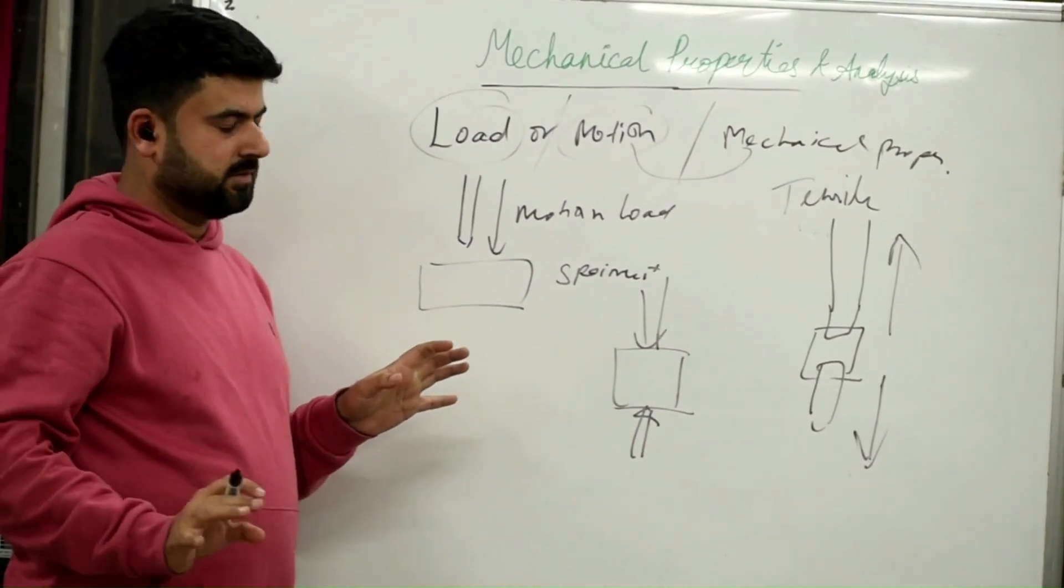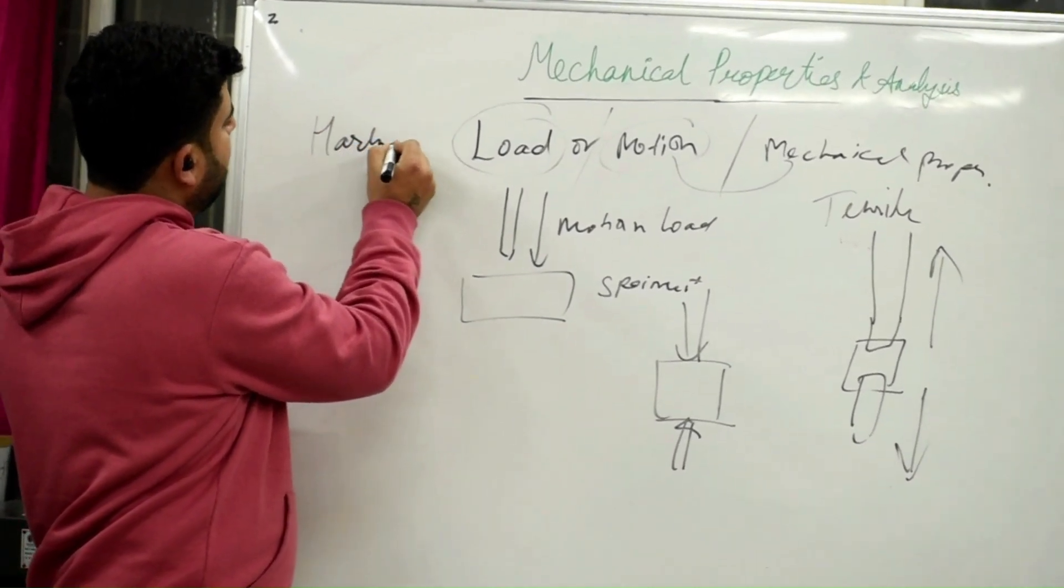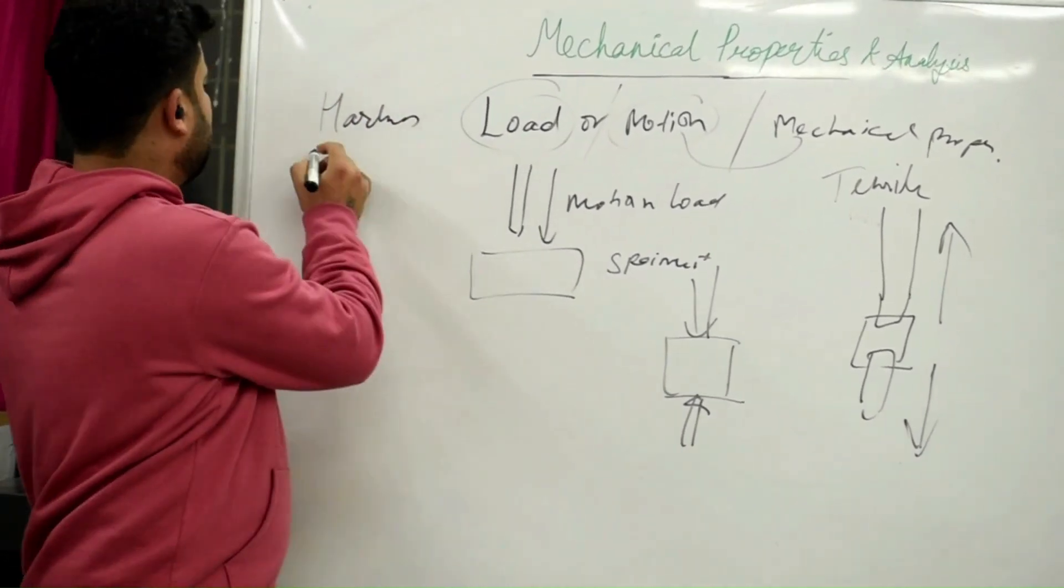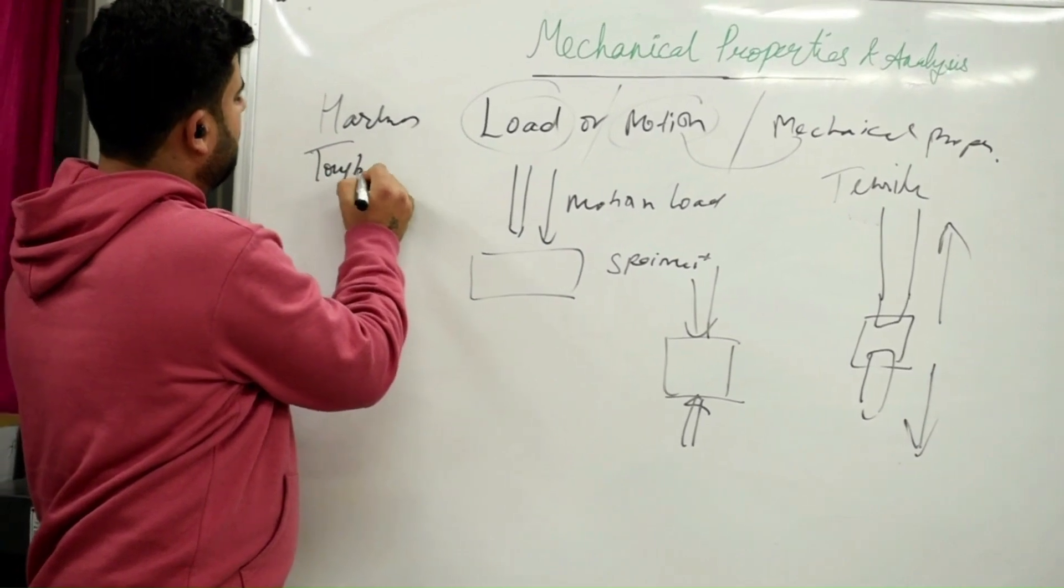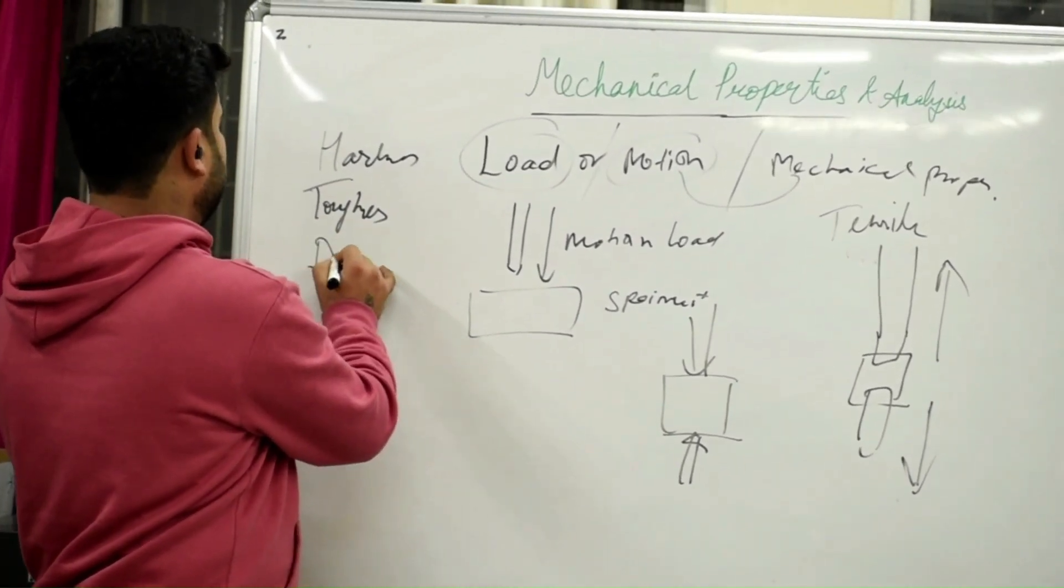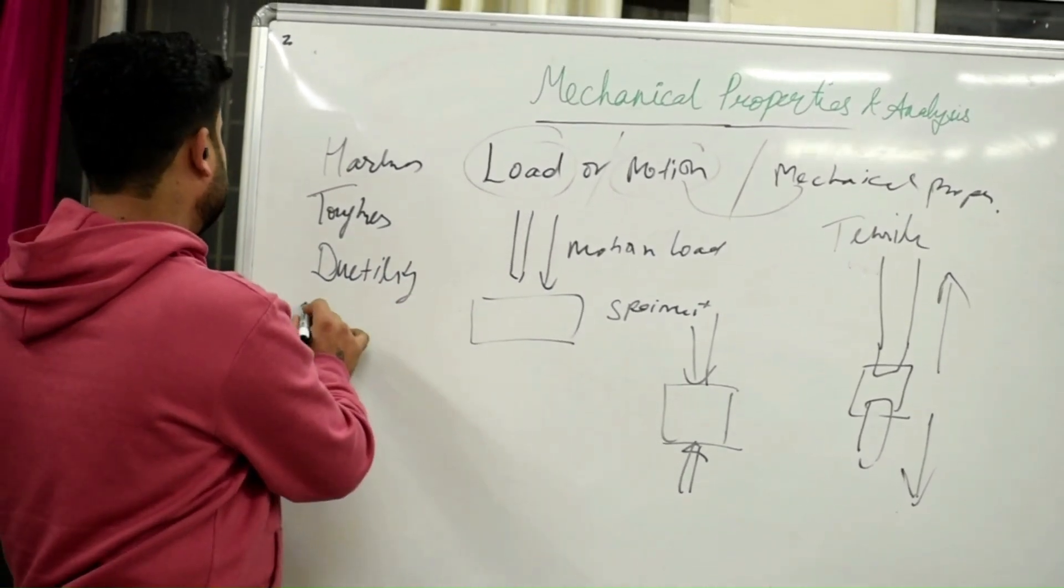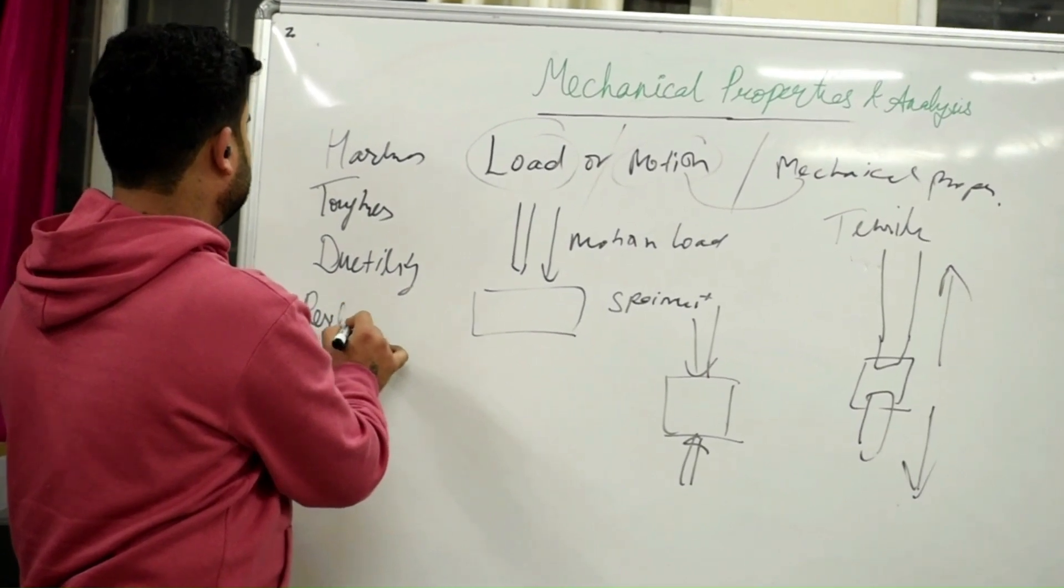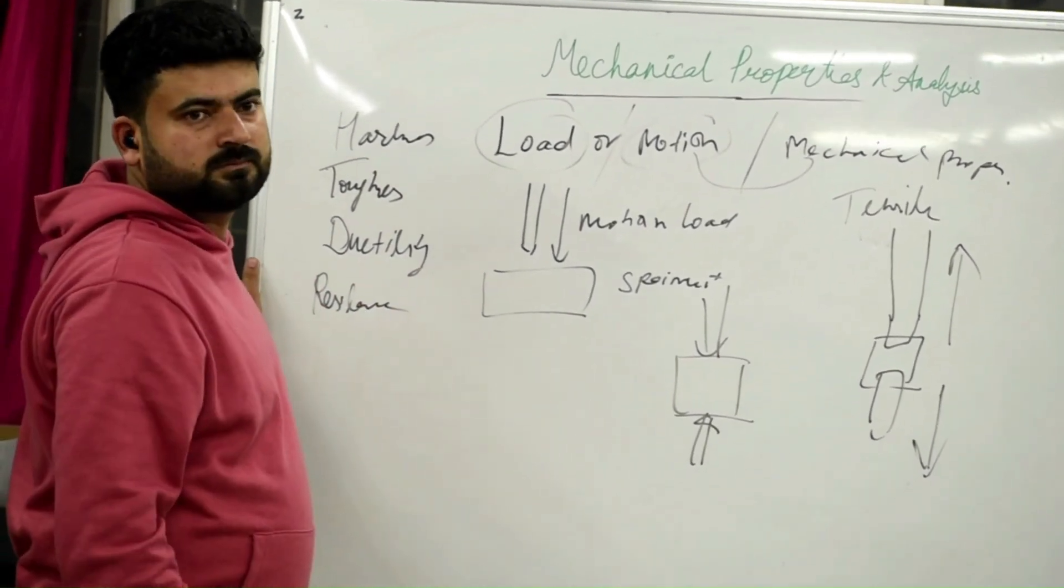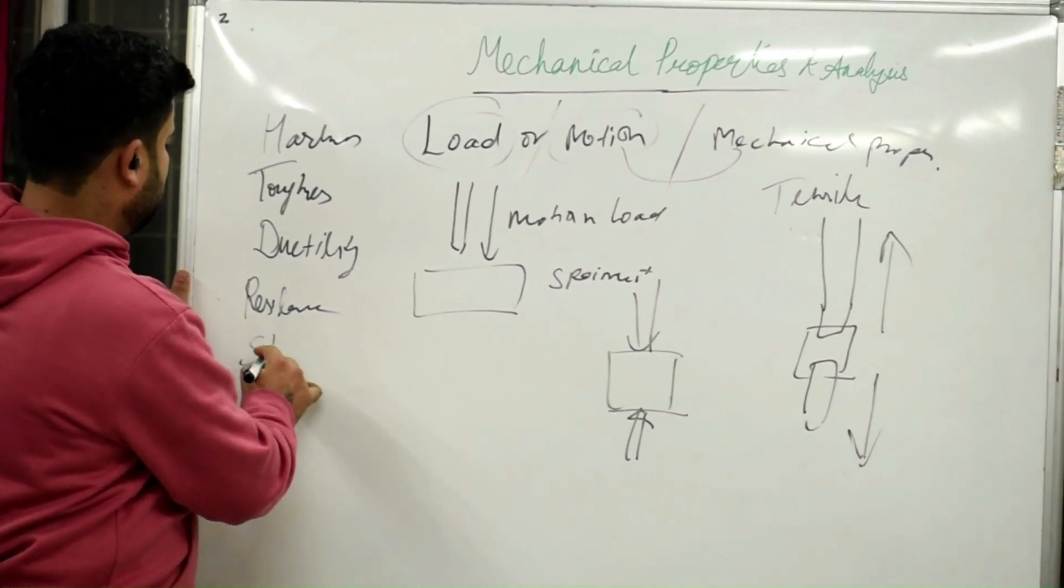What are the several Mechanical Properties? Hardness, Toughness, Ductility which is very important, Resilience, and some people also say Poisson is one of the properties.